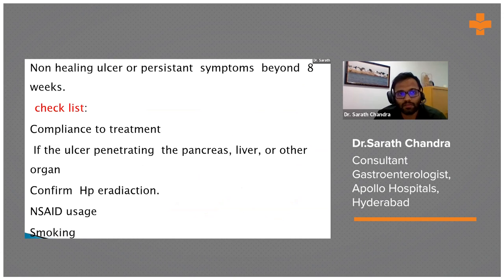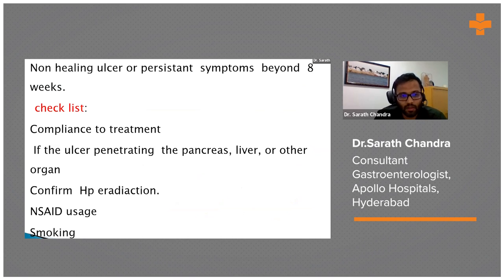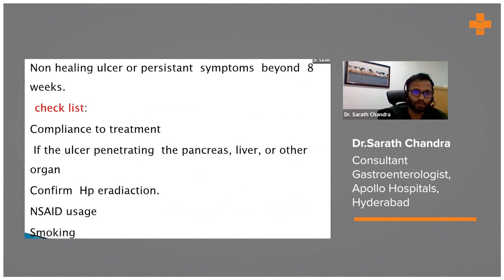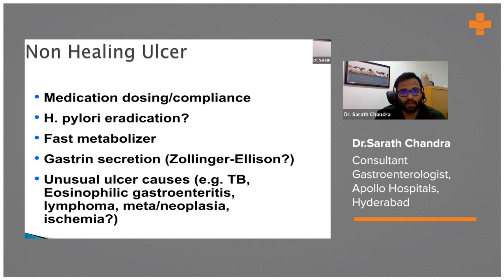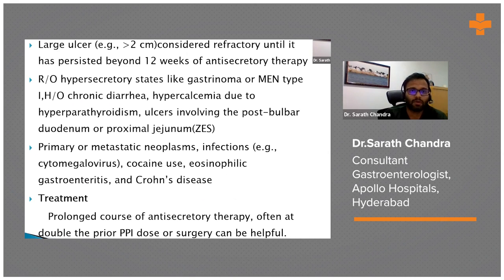What are refractory ulcers? If any patient has a persistent ulcer even after completing eight weeks of a course of PPI, then we can label them as refractory ulcers. We have to check for compliance to treatment, confirm H. pylori eradication, and whether the patient is continuing NSAID usage or smoking. We also need to look at medications, H. pylori eradication, fast metabolizers, or any rare causes like gastrin-secreting tumors, TB, lymphoma, or neoplasms.